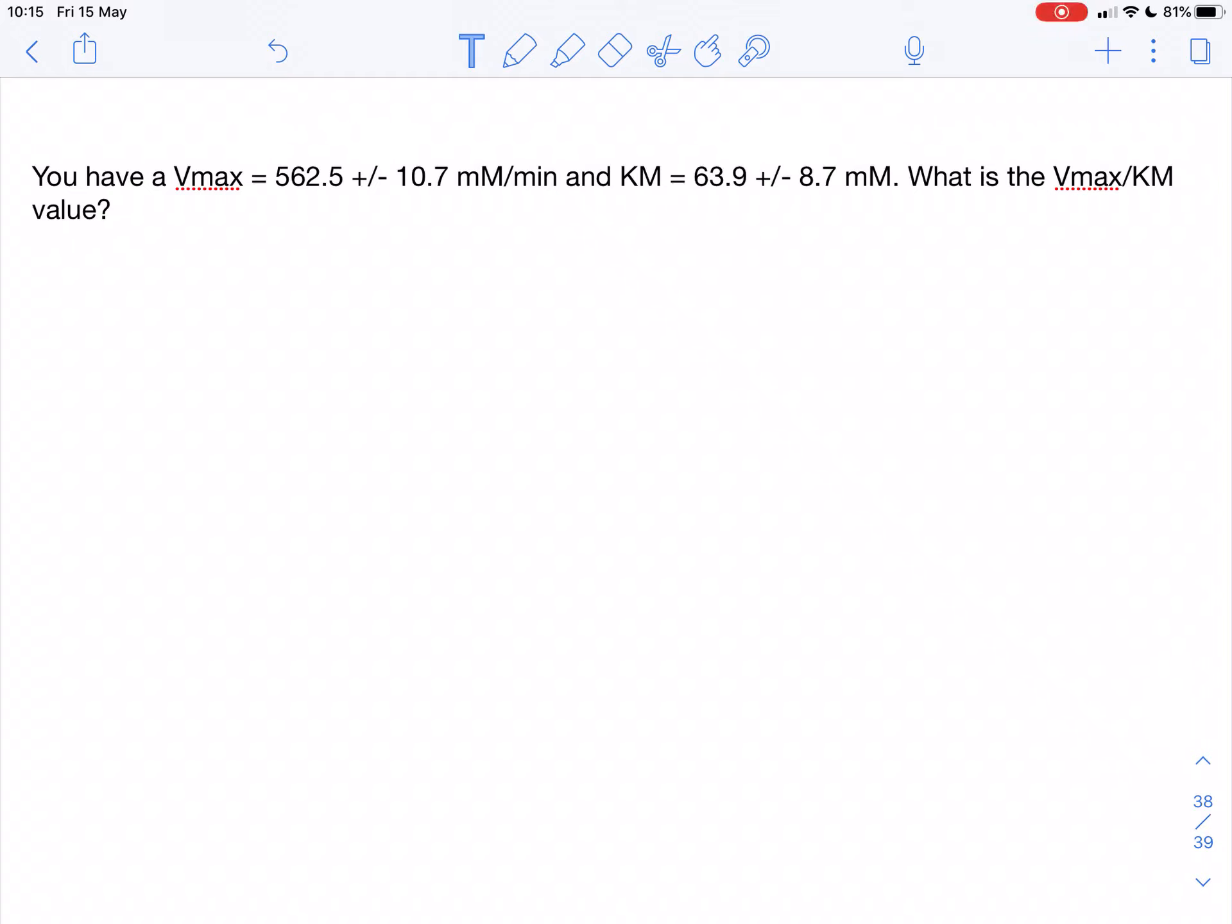In this question we are asked to calculate the ratio of two measurements with uncertainties, and we need to use a slightly different strategy for that. Here we want to calculate the ratio of Vmax over Km. It's something relevant for enzymology but it could be any ratio. So how are we going to do that?